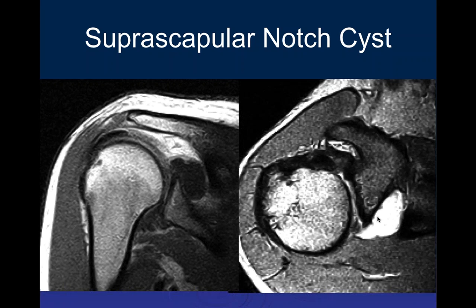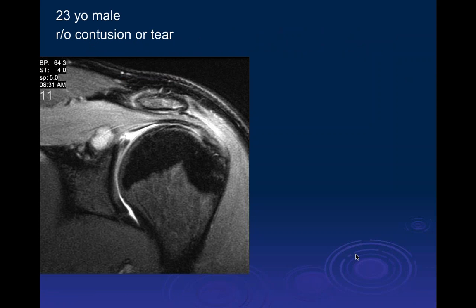Here you can see a cyst going into the suprascapular notch region — this is where the suprascapular nerve courses and you can see where it could potentially be impacted by this cyst. Case presentation: 23-year-old male, rule out contusion or tear. We have a chrono arthrogram with contrast on board. It looks like there is an irregularity of the superior labrum, suspicious for a tear.